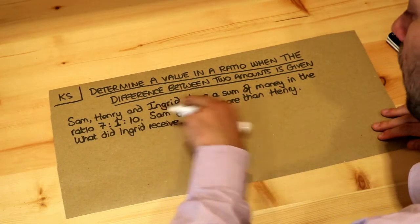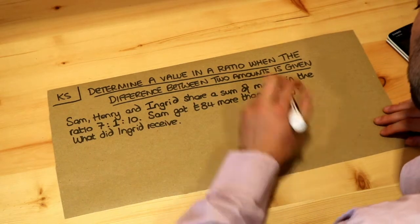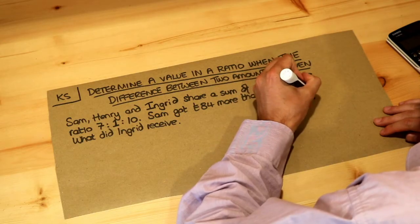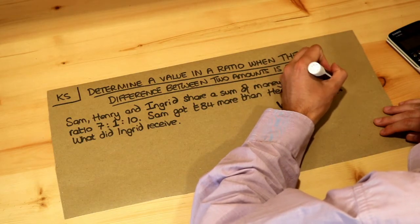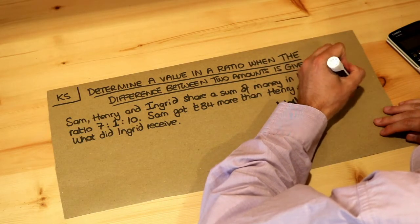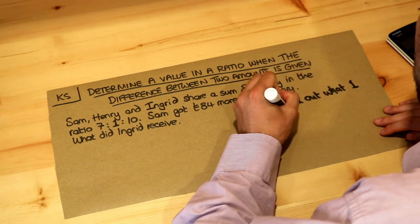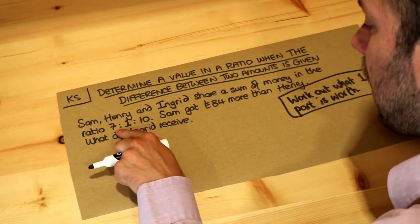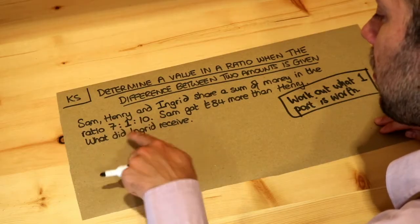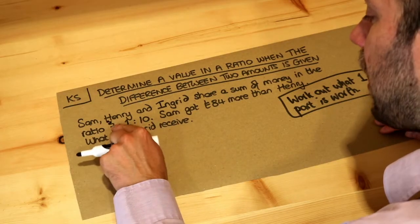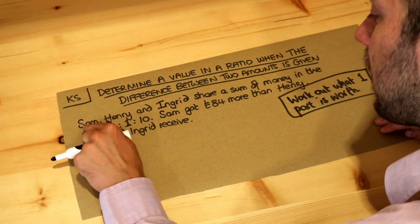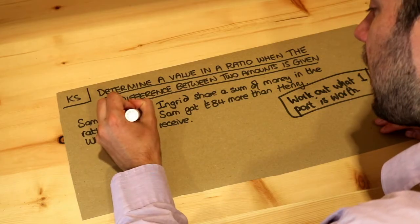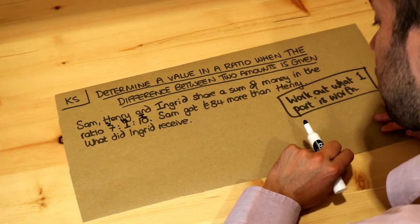The key with many ratio problems is to work out what one part is worth. In this ratio, each number represents different parts. So for each 7 parts of money that Sam gets, Henry gets one part and Ingrid gets 10 parts.